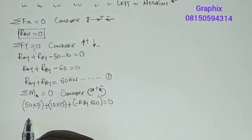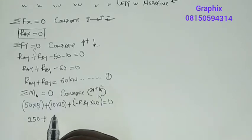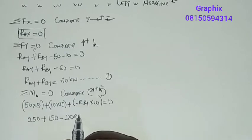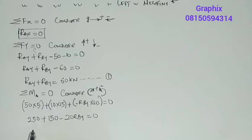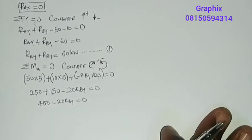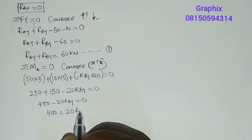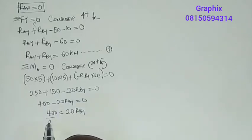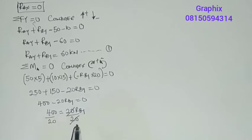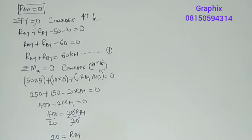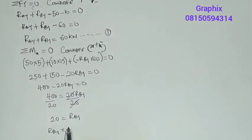So 50 × 5 = 250, and 10 × 15 = 150. We get 250 + 150 − 20·RoBY = 0, which is 400 − 20·RoBY = 0. Taking −20·RoBY to the other side: 400 = 20·RoBY. Dividing both sides by 20, RoBY = 20 kilonewtons.